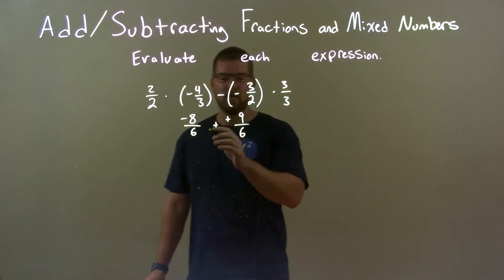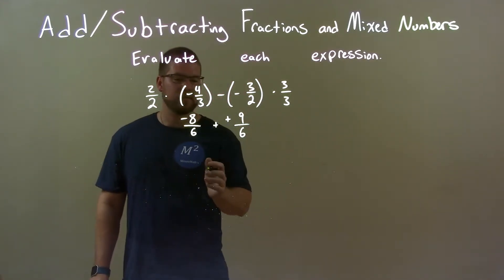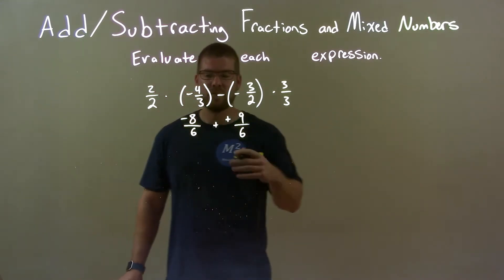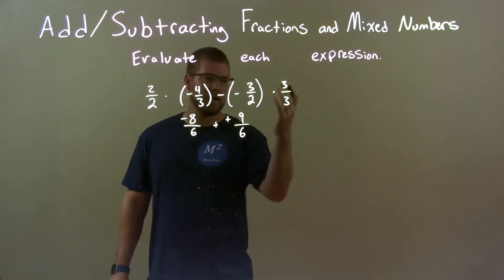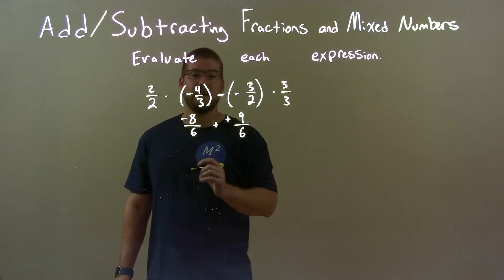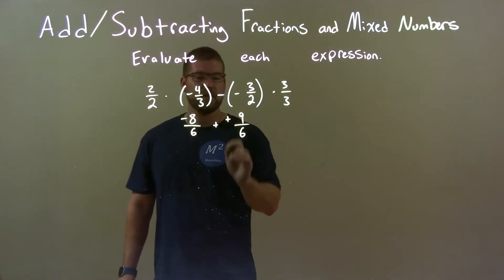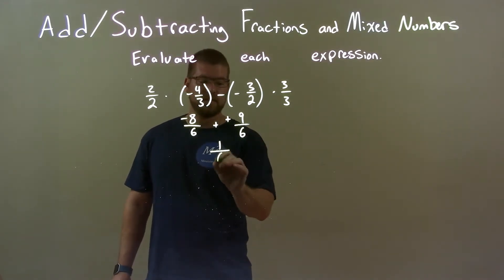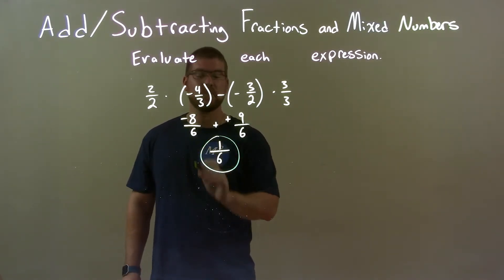So, now we have negative eight over six plus positive nine over six. Well, they have the same base now, which they're supposed to, by our little trick here. And so, we just worry about the numerator. Negative eight plus nine is a positive one. So, we have one over and then six right here. And so, our final answer is just one sixth.